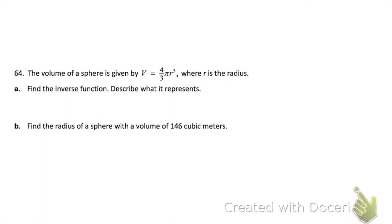The last problem, problem 64 — when finding the inverse of a word problem, don't switch your variables, so don't switch v and r here. Start by getting rid of the 4 thirds by multiplying by the reciprocal, then divide by pi, then take the cube root to get rid of the cubed.